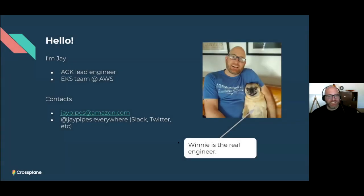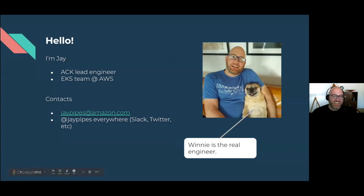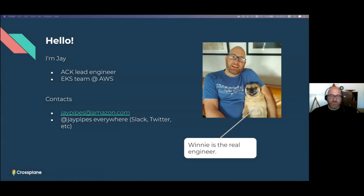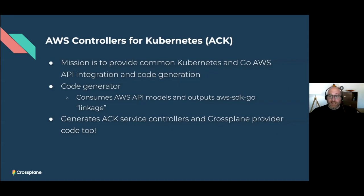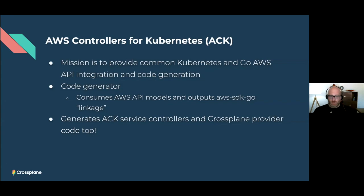Thanks Muvavak. Hey, I'm Jay Pipes, a principal engineer on the EKS team at AWS, mostly focused on open source contribution and the AWS Controllers for Kubernetes project. Let me give you a quick overview of what ACK is all about. ACK is a set of custom Kubernetes controllers — one for each AWS service API — where we define a custom resource for resources within that API, such as an S3 bucket or an SNS topic, and the ACK service controller manages resources in that particular AWS API.